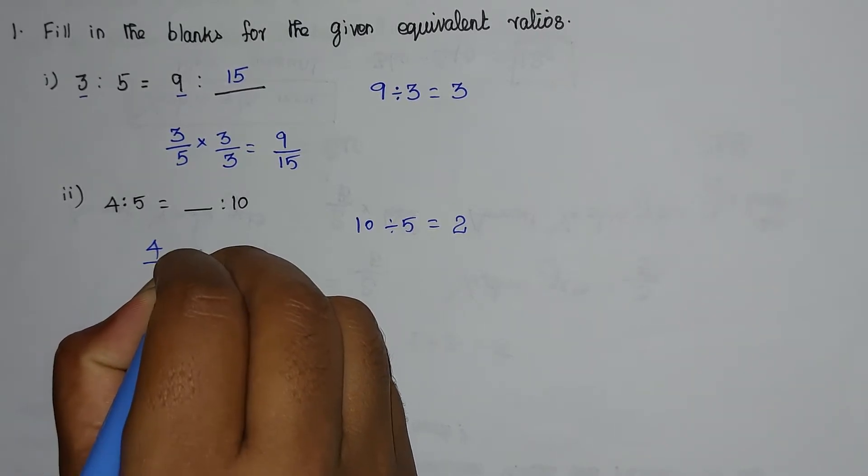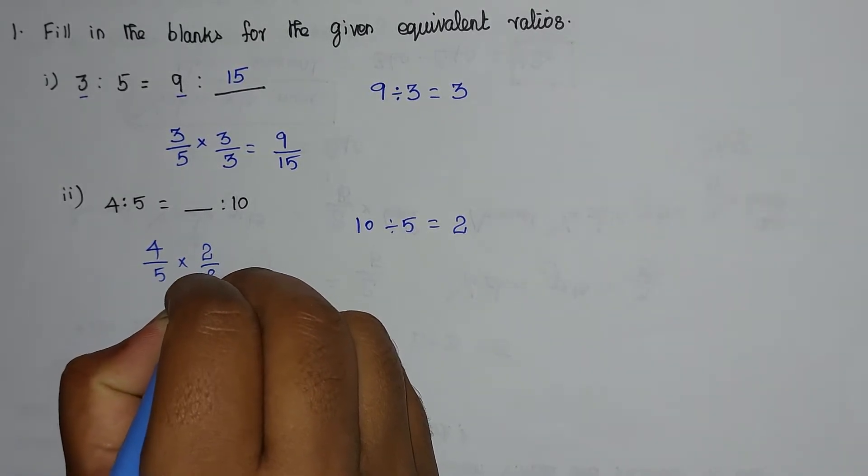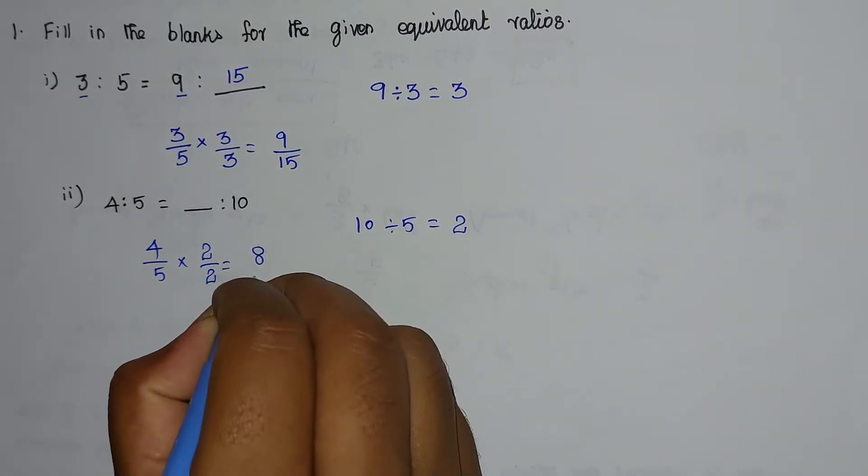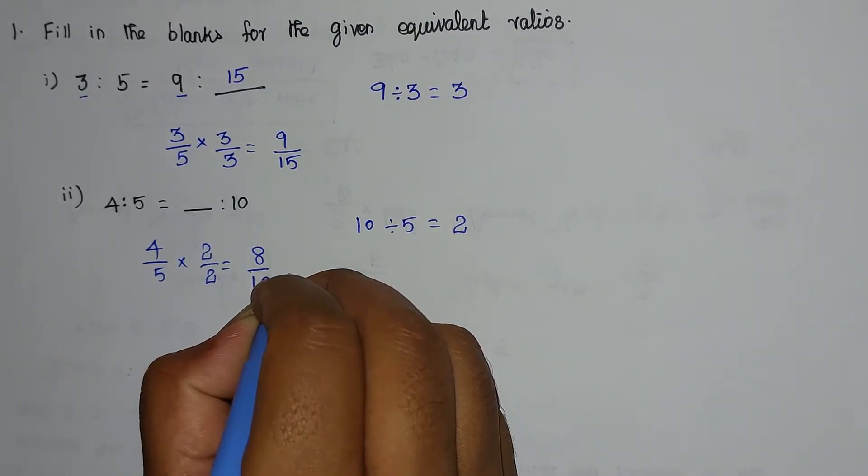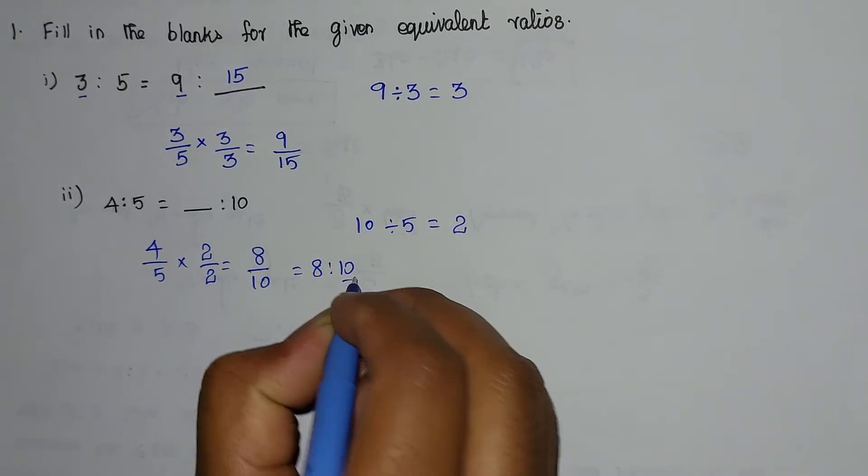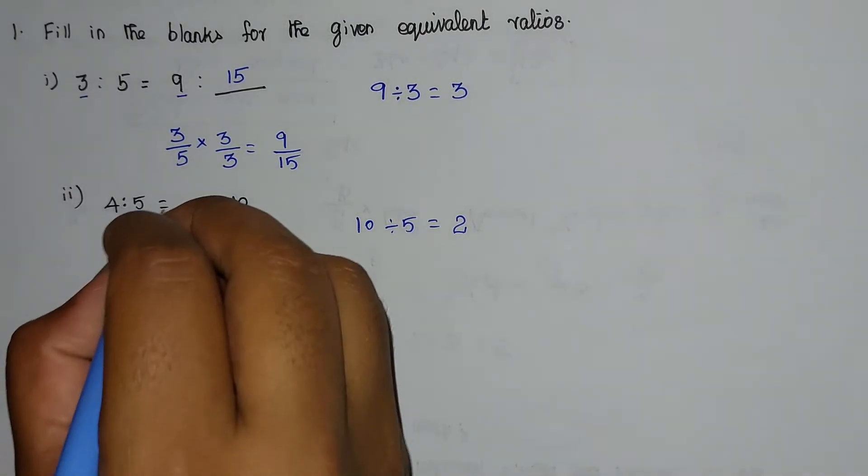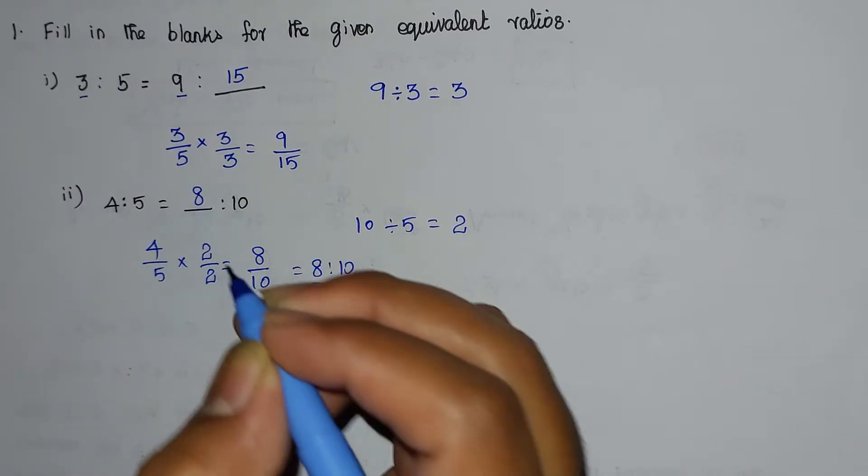We multiply 2 by 5 and 2 by 2. Now we multiply 4 by 2. So the numerator value is 8.